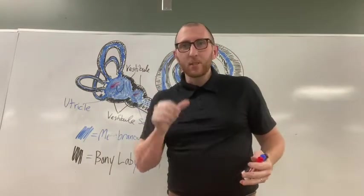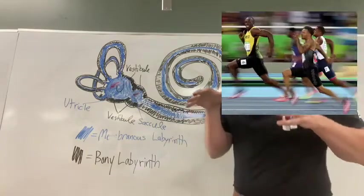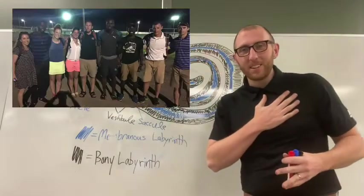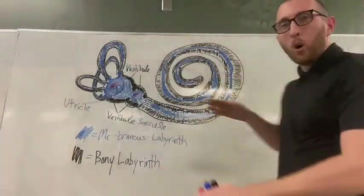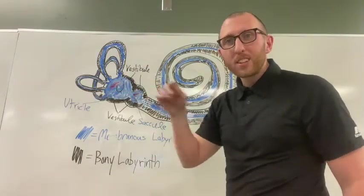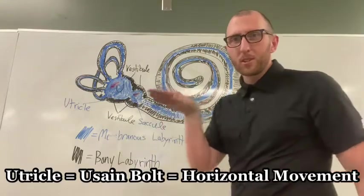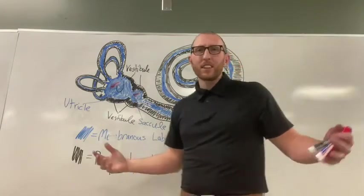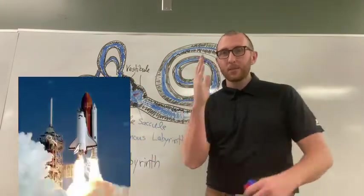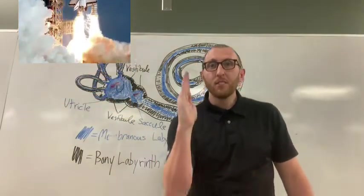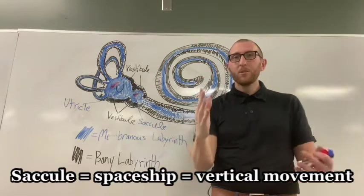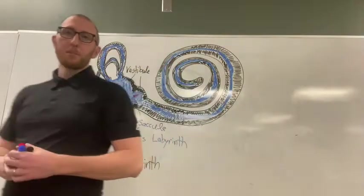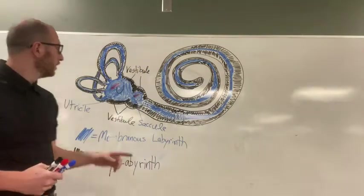Here's how I remember it: Usain Bolt, the fastest man in the world — whom I've had the privilege to meet in Jamaica — runs as fast as he can horizontally. Usain Bolt starts with U, utricle starts with U, so that's horizontal movement. For saccule, I think of a spaceship, which takes off vertically — so vertical movement is detected by the saccule.